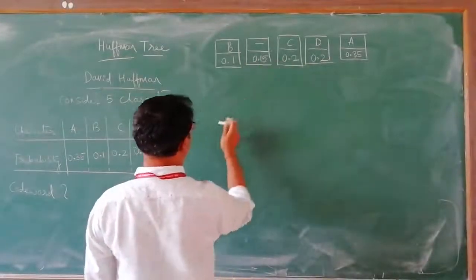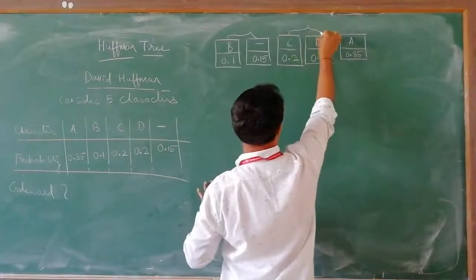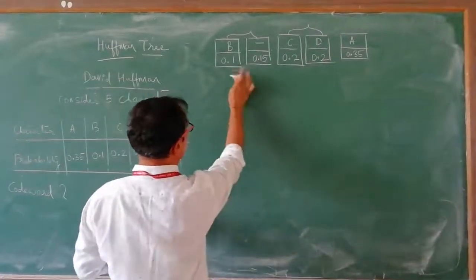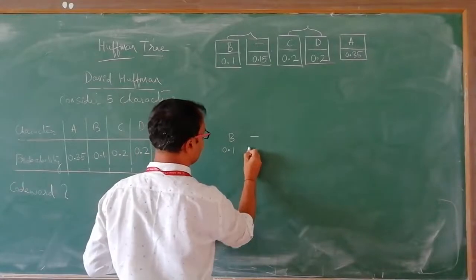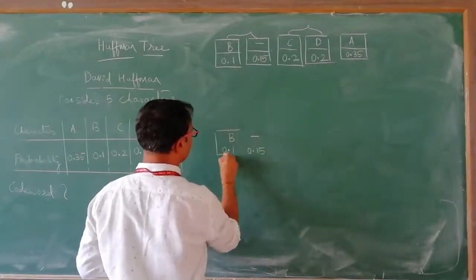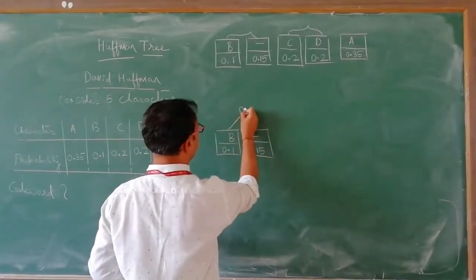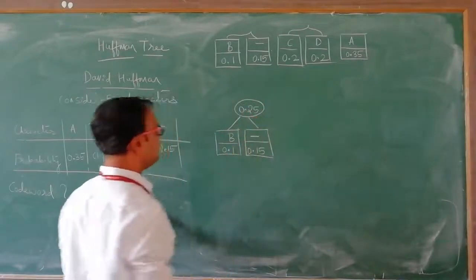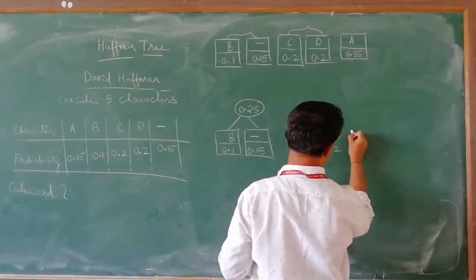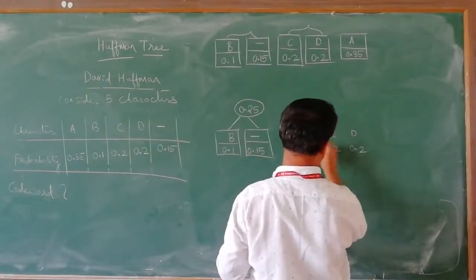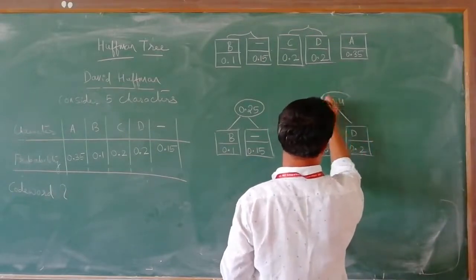Now, just go on building subtrees from left to right. I club the first two to generate a subtree: B (0.1) and hyphen (0.15). We add both probabilities to generate a node — we get 0.25. Similarly, merge the next two: C (0.2) and D (0.2). Merge both of them, you get 0.4.